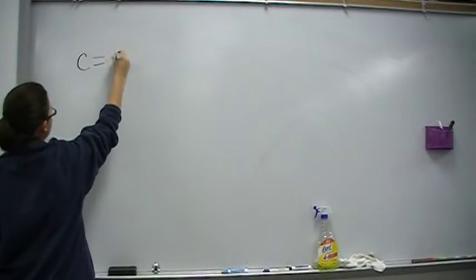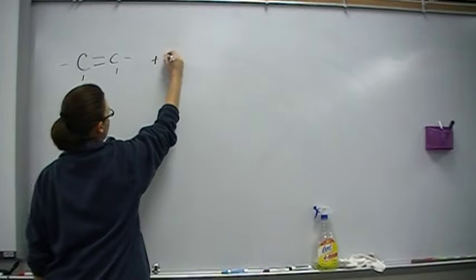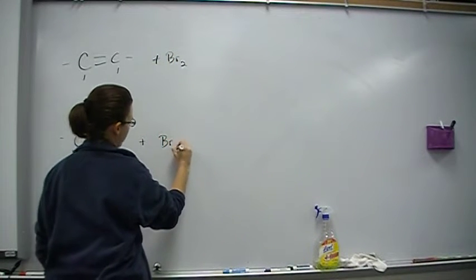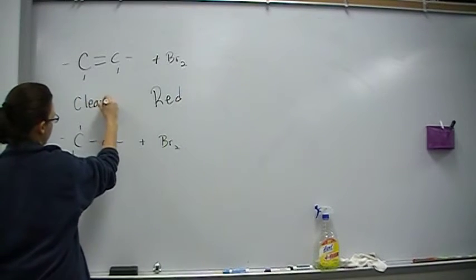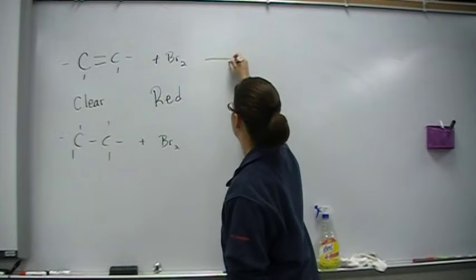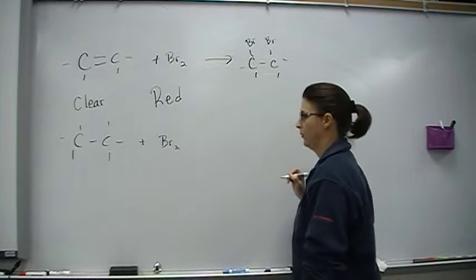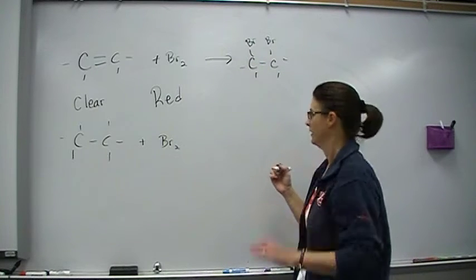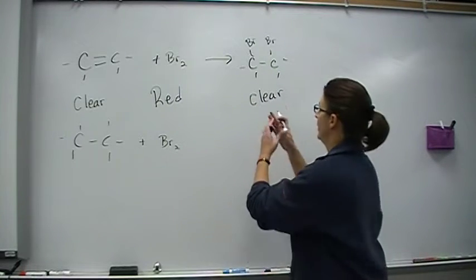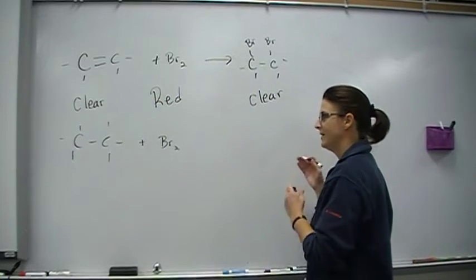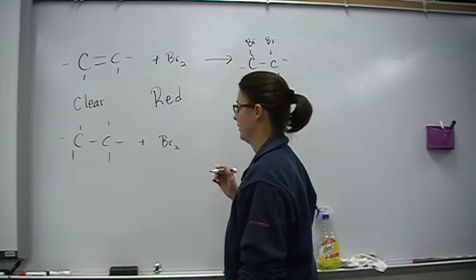So what you can do is take bromine with its red color and add it to something. And based on the color change, the results, you could tell if it had a double bond. So let's say I have something unsaturated here and something saturated. I'm going to add bromine to each one of them. Now the thing is, bromine is red. The beginning thing is clear. So when I add bromine to ethene, it just jumps on there. And what color do you think the product is? Yes, clear. Because the only time the Br2 is red is when it's actually Br2, here it's split apart. So the red color goes away. That tells me, because my product's clear, that my original thing was unsaturated or had a double bond or a triple.